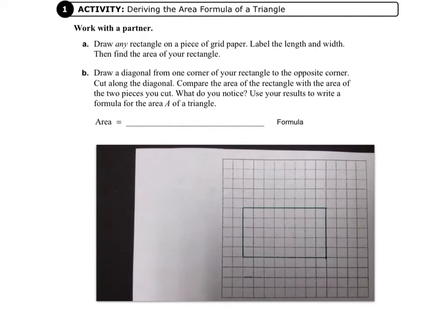Our first job is to draw any rectangle on a piece of grid paper. Label the length and width, then find the area of your rectangle. Look at the video at the bottom of the page, and we'll do this together.